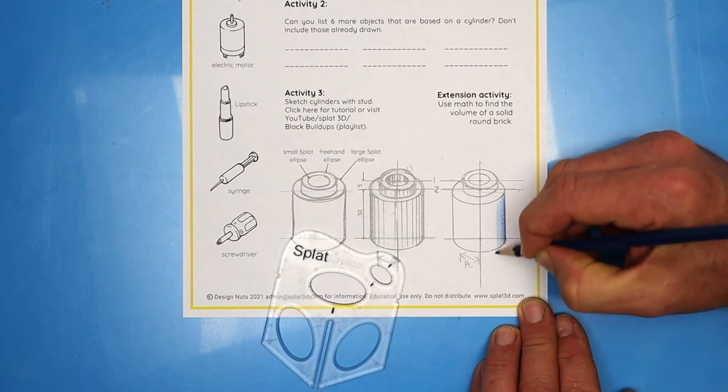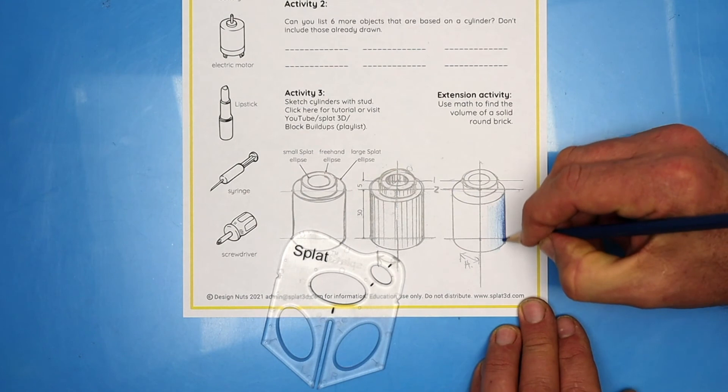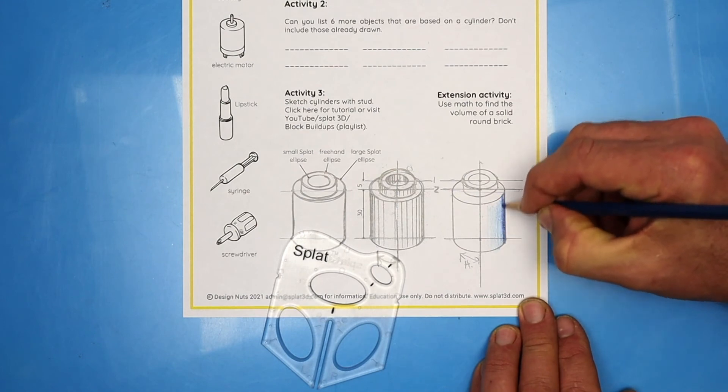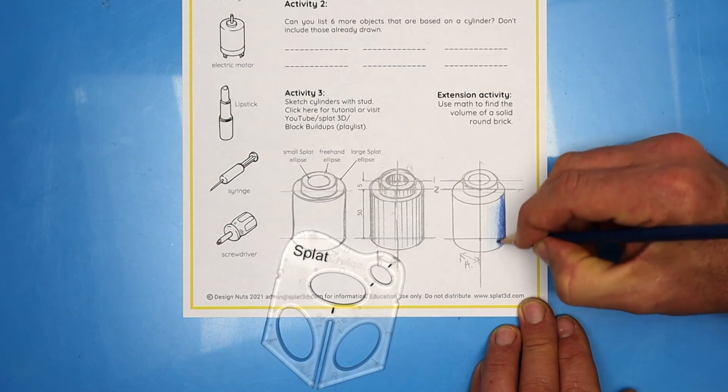Work your fade towards the highlight, and if it runs out, it becomes too light. Go all the way back to the dark, darken that up, and work all the way through your fade, taking it a little bit closer towards the highlight.